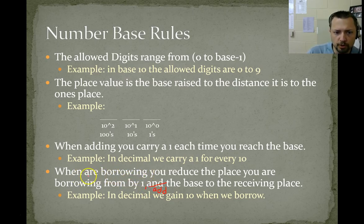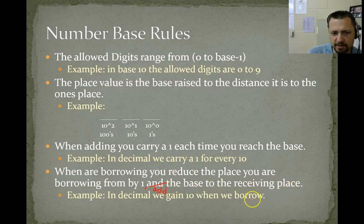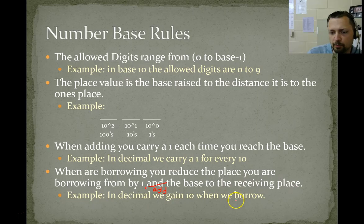When you are borrowing, you reduce the place you are borrowing from by 1, and then we add the base to the receiving place. For example, in decimal, we gain 10 when we borrow.